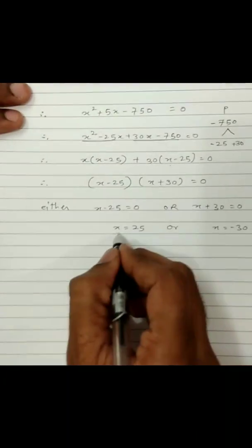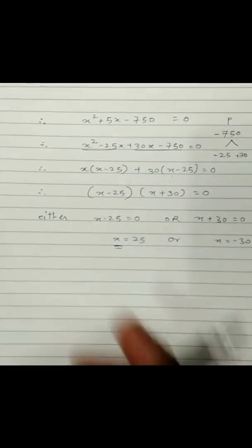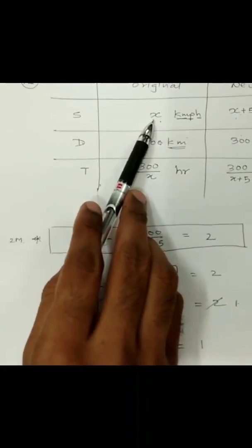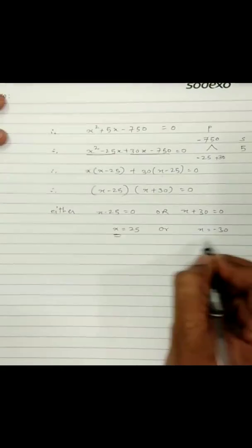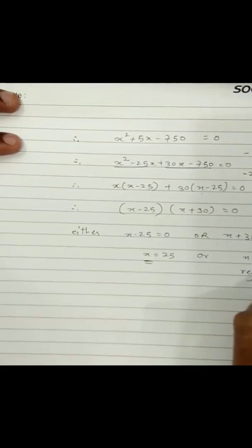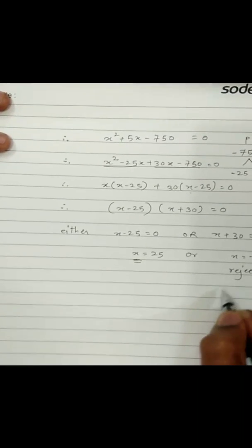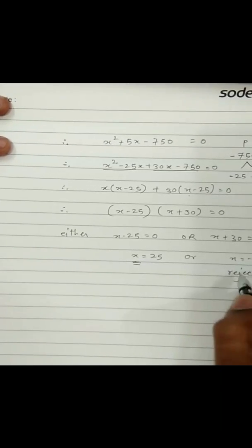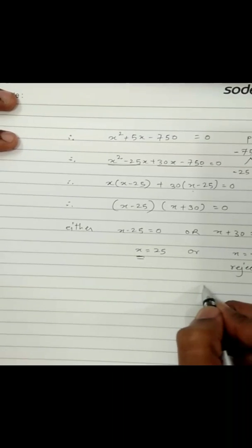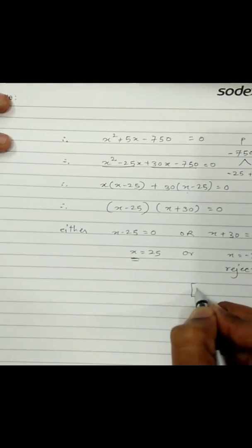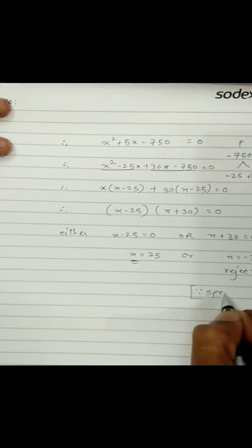This x was speed, and speed cannot be negative. So x equals negative 30 is rejected. We must write the reason for rejecting it: since speed cannot be negative, x equals negative 30 is rejected, and therefore the original speed of the train is 25 km per hour.